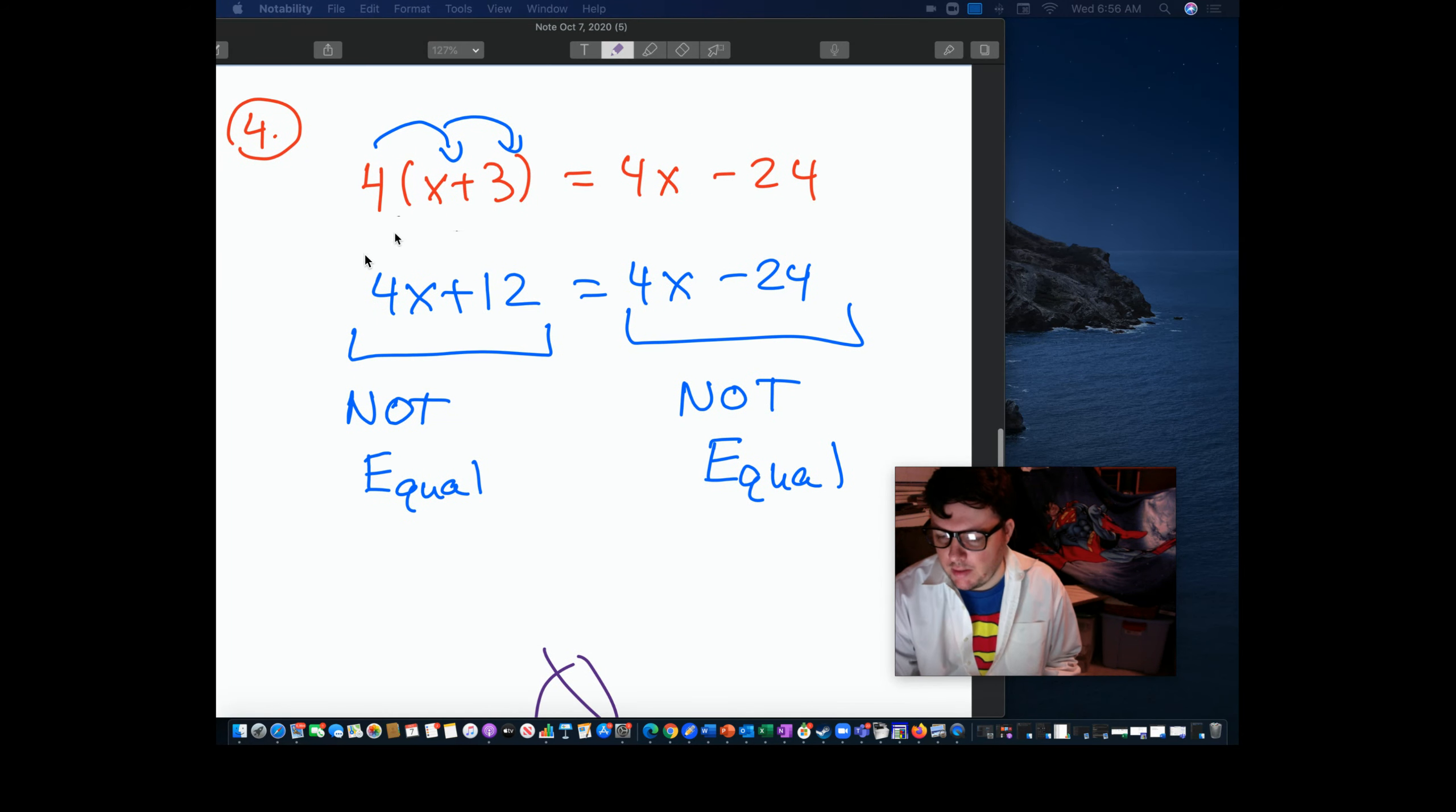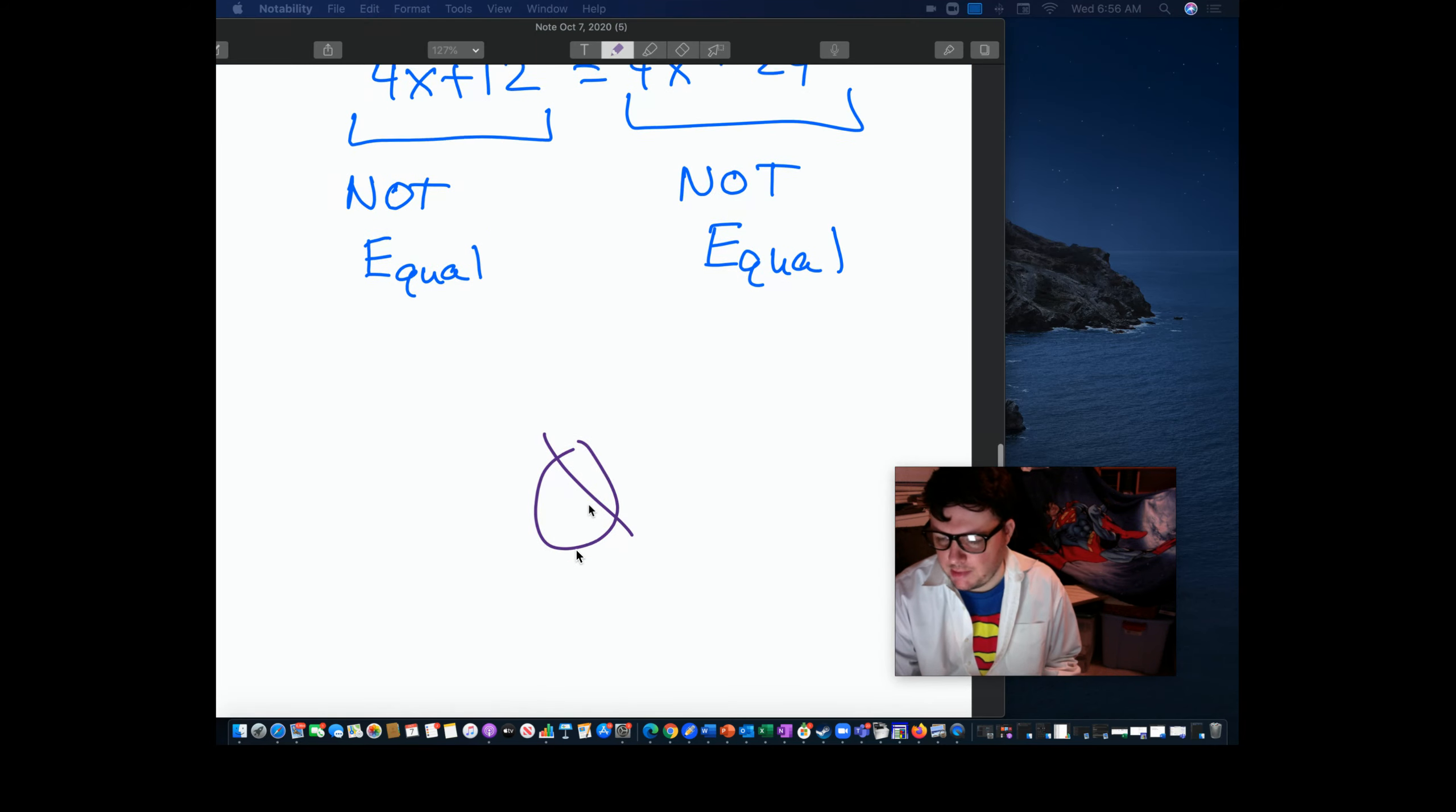On number 4, what do we notice here? Well, if we distribute, we get 4x plus 12 equals 4x minus 24. Cause of alarm? Not really. We know that they're not going to be equal, because they're not the same thing. They both have 4x, but the left has 12. The right has negative 24. When this occurs, we have no solution or the empty set.